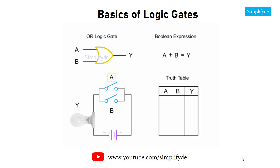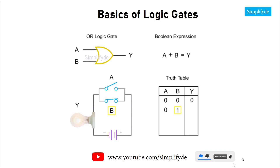Thus, when A and B are open, or low, their values in the truth table are zero. The Y, or the output, is also zero, or low, and the bulb does not light. Now, when either, or both, A and B are closed, or high, then Y, or the output, is one, or high, and the bulb lights. Placing the closed states of the switches in the truth table, we see that when either A or B are one, then Y is one. If both A and B are one, Y is also one. Thus, in an OR logic gate, the output is high when any inputs are high.